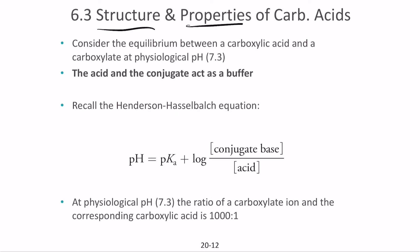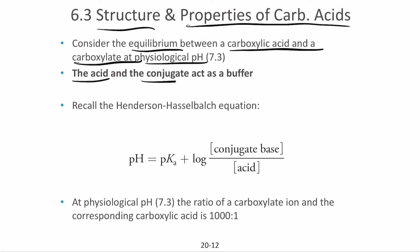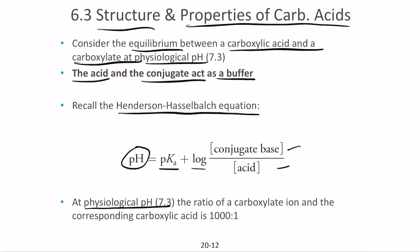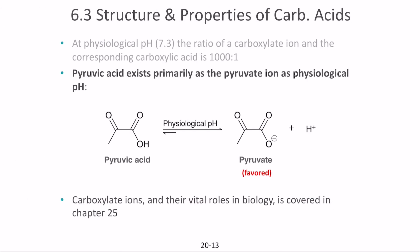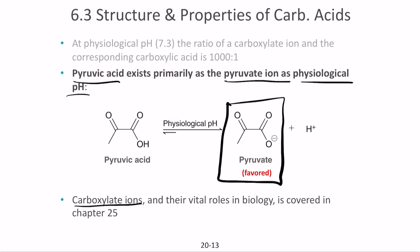Considering the equilibrium between a carboxylic acid and a carboxylate ion at physiological pH, the acid and conjugate base act as a buffer. Using the Henderson-Hasselbalch equation — pH = pKa + log([conjugate base]/[acid]) — at physiological pH of 7.3, the ratio of carboxylate ion to carboxylic acid is 1000 to 1. Pyruvic acid also exists primarily as pyruvate ion at physiological pH. These carboxylate ions play vital roles in biology, especially in the citric acid cycle.